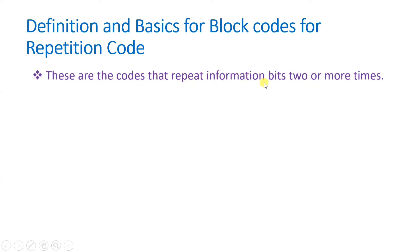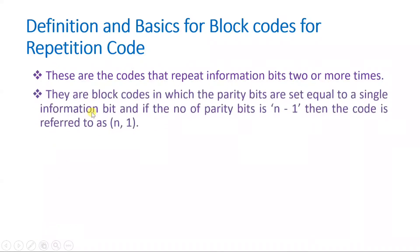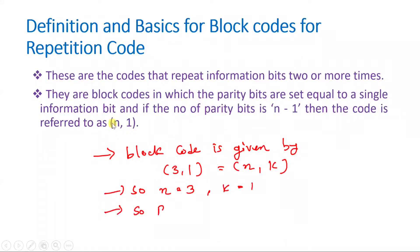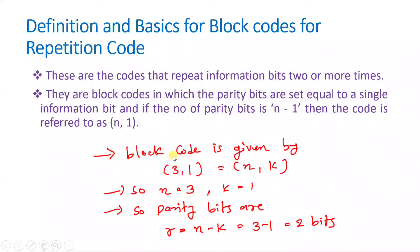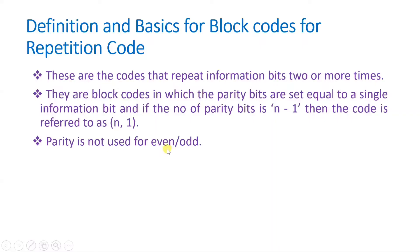Repetition codes repeat information bits two or more times, which is why they are called repetition codes. They are block codes in which parity bits are set equal to a single information bit. If the number of parity bits is n minus 1, then the code is referred to as n-comma-1. For example, in a 3-comma-1 code, 1 is the information bit and the total number of bits is 3, so parity bits r equals 3 minus 1, which is 2. Here, parity bits are not even or odd parity — they are simply repetitions of the information bit.